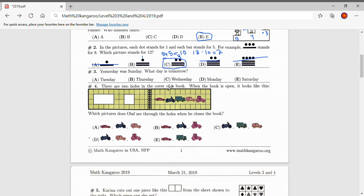Number three. Yesterday was Sunday. What day is tomorrow? So let's put the days of the week in order. Saturday. So yesterday was Sunday. That means today is Monday. Meaning tomorrow is Tuesday. So the answer for number three is A.